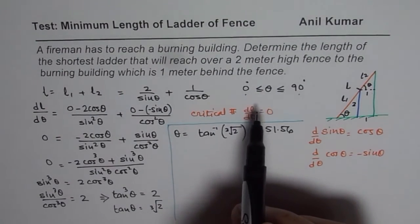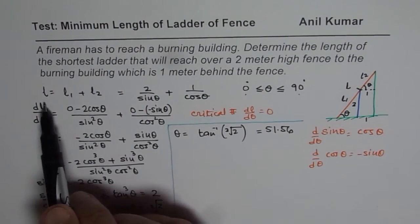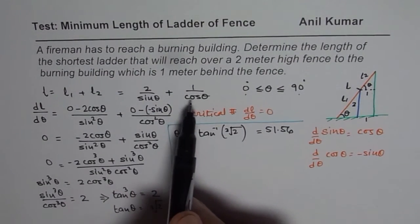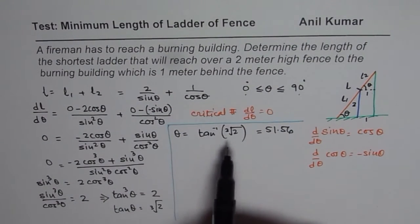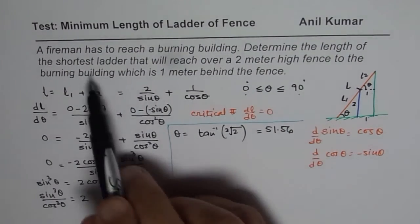As you know, for 0, L is going to be infinite. For 90, L is going to be infinitely long and therefore that should give us the minimum value. So the question is to determine the length of the shortest ladder.